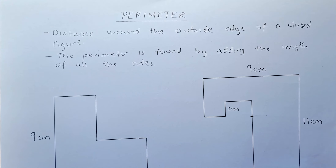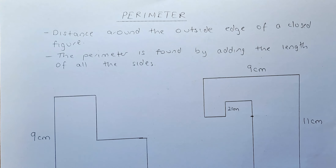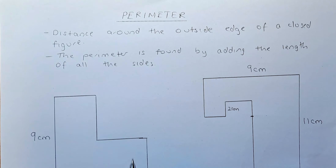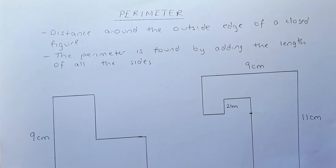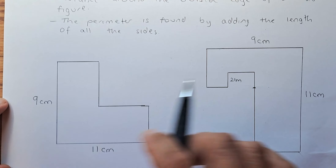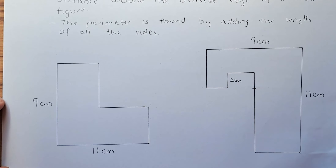In this video, we are going to introduce perimeter. What is perimeter? It's just the distance around the outside edge of a closed figure. This is found by adding the length of all the sides. So for example, in this diagram, we need to add the length of all the sides and that will be the perimeter.